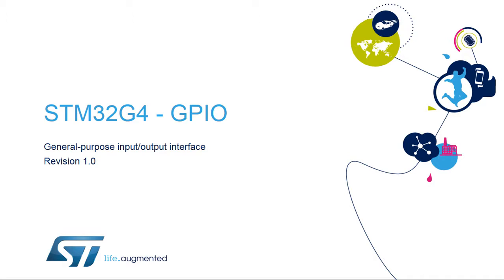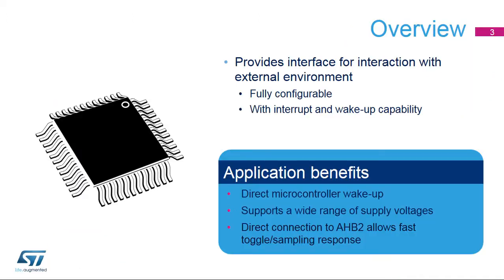Welcome to this presentation of the STM32 General Purpose I/O Interface. It covers the General Purpose Input and Output interface and how it allows connectivity to the environment around the microcontroller. GPIO pins of STM32 microcontrollers provide an interface with the external environment. This configurable interface is used by the MCU and all other embedded peripherals to interface with both digital and analog signals.